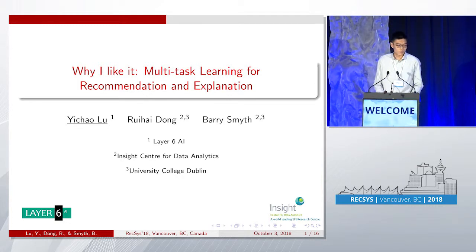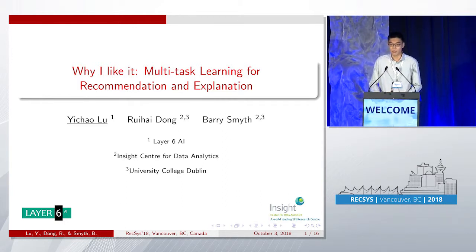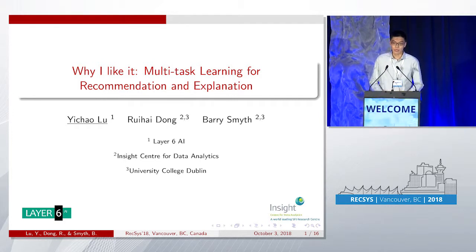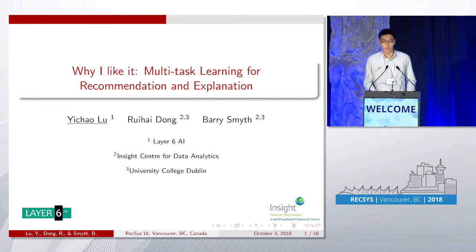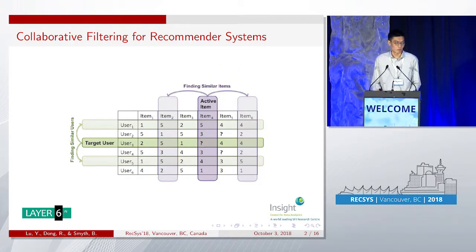Good morning everyone. The paper I'm going to present today is 'Why I Like It: Multitask Learning for Recommendation and Explanation.' My name is Yichal Lu and I'm from Layer 6 AI. This is joint work with Ray Haidong and Barry Smith.